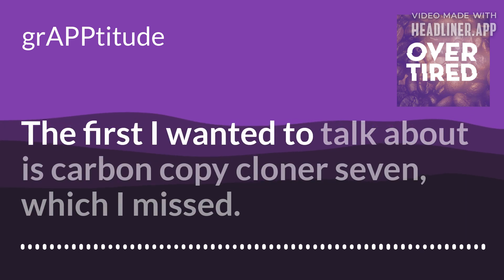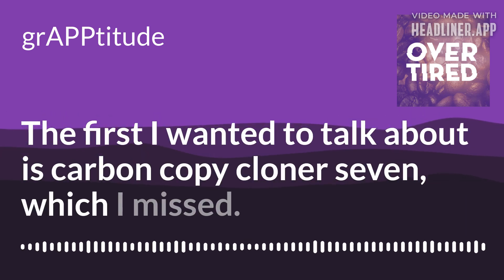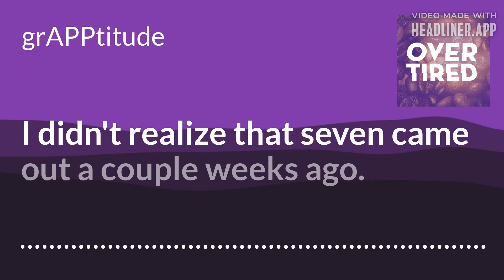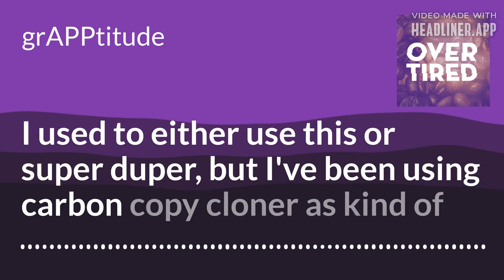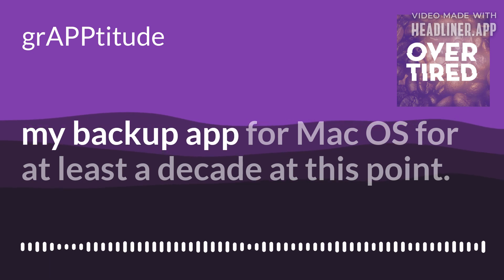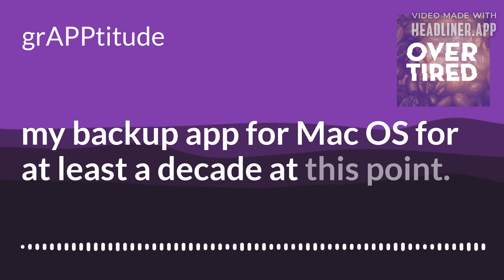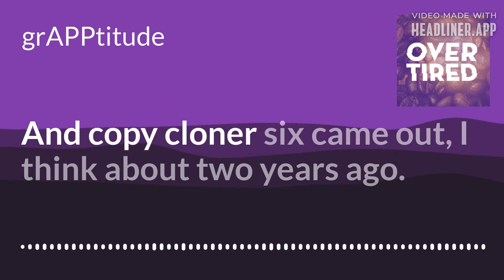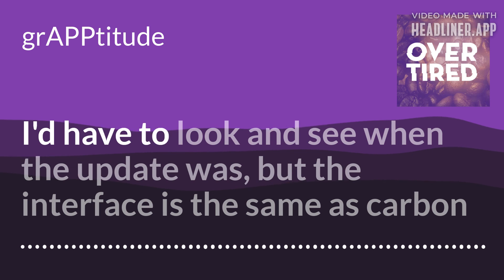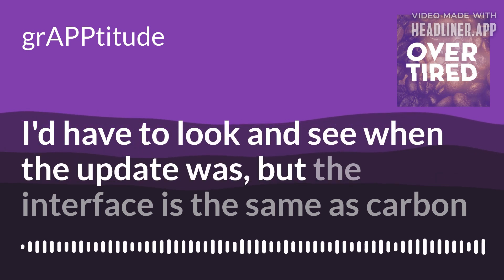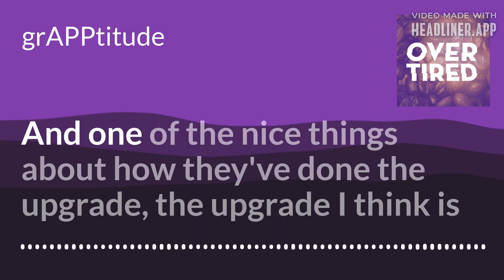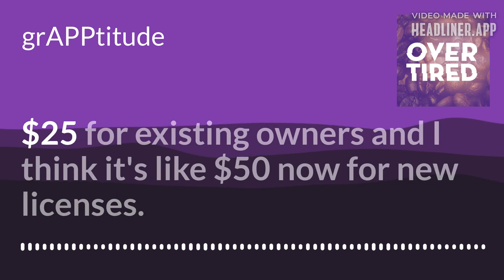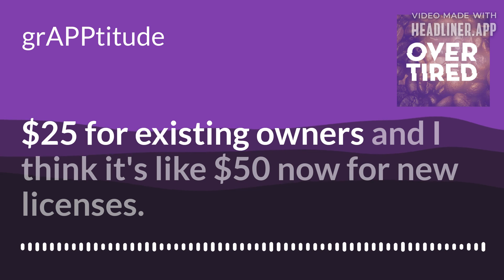The first one I wanted to talk about is Carbon Copy Cloner 7, which I missed — I didn't realize that seven came out a couple of weeks ago. This is the app I've used. I used to use either this or Super Duper, but I've been using Carbon Copy Cloner as my backup app for Mac OS for at least a decade. Carbon Copy Cloner 6 came out about two years ago. The upgrade is $25 for existing owners and $50 for new licenses.